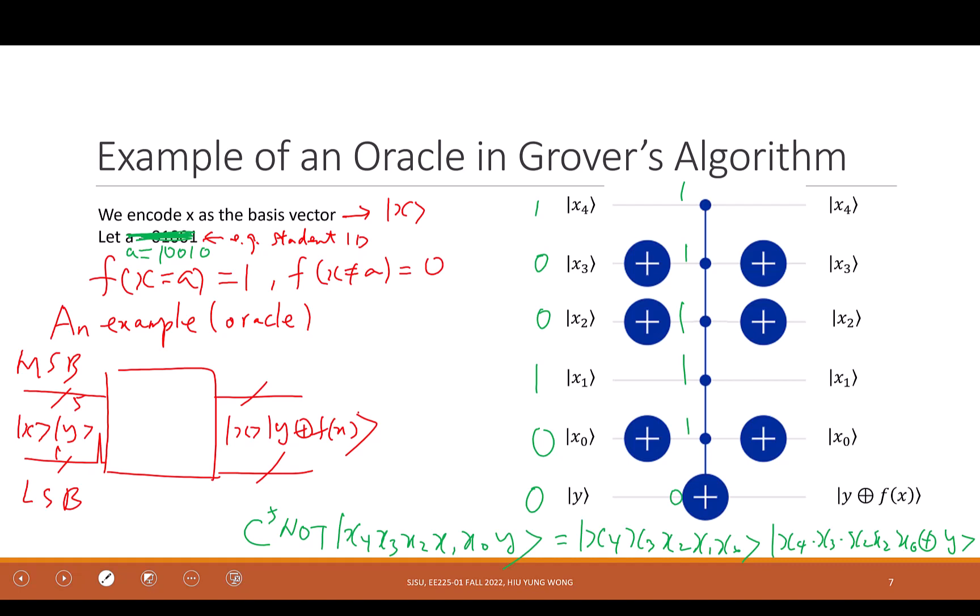If A changes, then the oracle needs to change. The oracle must contain the information of your problem, and your problem is f(A) = 1. That's why your oracle must be different for different problems. Finding you in this class is different from finding me, because we have different student IDs.